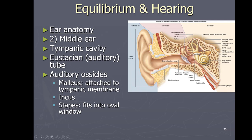Those are your three auditory ossicles. The malleus attaches to the tympanic membrane; the stapes on the other end fits into an opening called the oval window, which we'll come back to. The middle ear also has the Eustachian tube, which goes from the middle ear down to the pharynx and basically your throat.